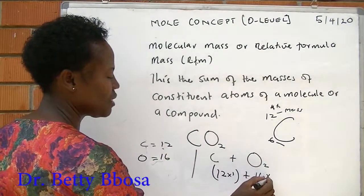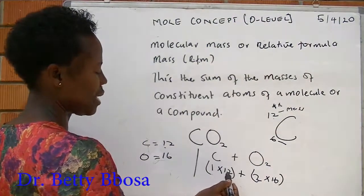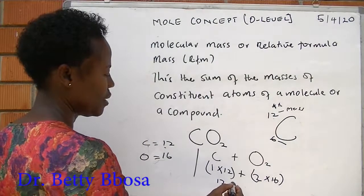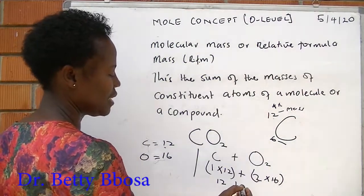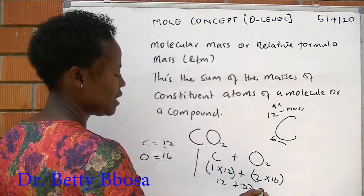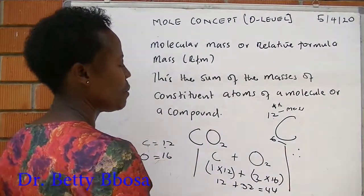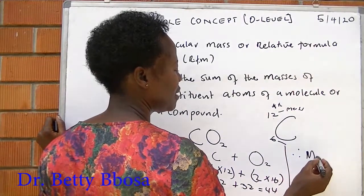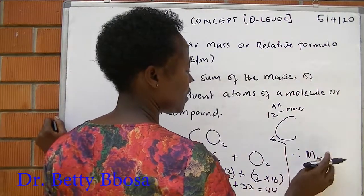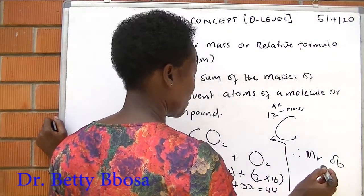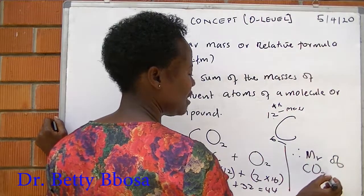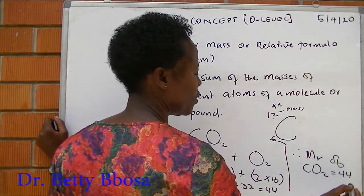So 1 times 12 is 12, plus 2 times 16 is 32, and the total is equal to 44. Therefore, the molecular mass of carbon dioxide is equal to 44 grams.